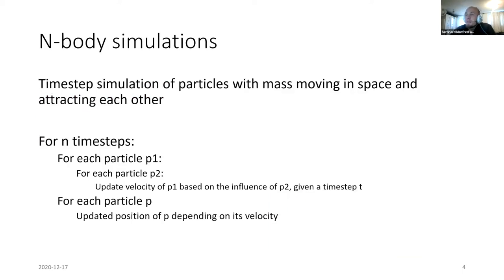The n-body simulation I'm looking at is a time-step simulation of particles with mass that move in space. Each particle is a point in 3D space — they have a mass, a position, and a velocity. We run a number of time steps in a loop, and for each particle p1, we go over each of the other particles p2 and update the velocity of p1 based on the influence of p2. We take both particles' positions, measure the distance, look at the mass of the other particle, and compute how much that impacts p1.